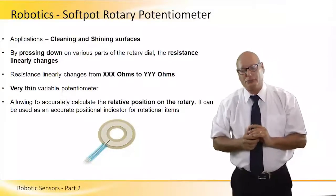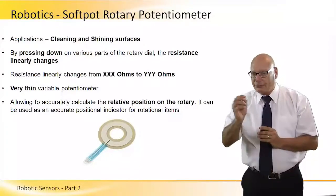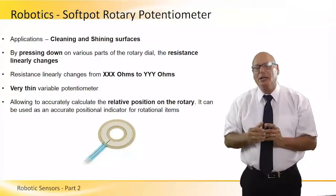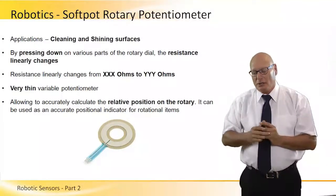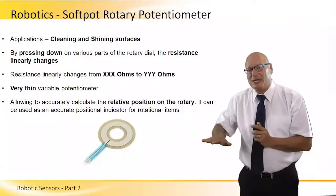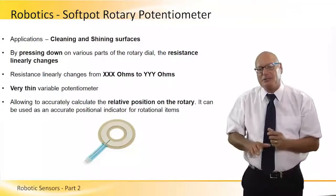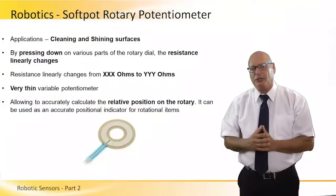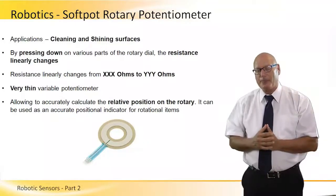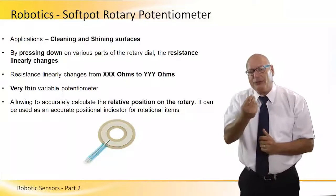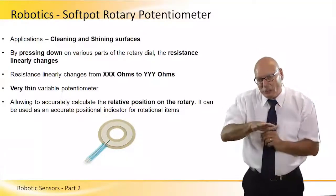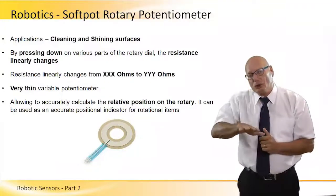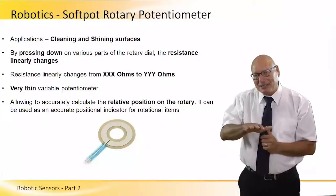Soft pot rotary potentiometer — another type of sensor for detecting position on rotating surfaces. The way it operates is by pressing down on various parts of the rotary dial; the resistance linearly changes. We can place our hand on this sensor and depending on where we press, there will be a different resistance at the output, ranging across the specified ohm range depending on the particular potentiometer integrated in the system. It's a very fine, very thin variable potentiometer, and we affect the resistance by pressing on the material. The relative position on the rotary tells us exactly where we are.